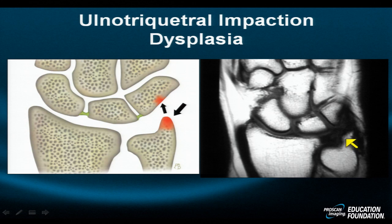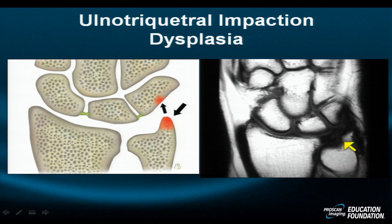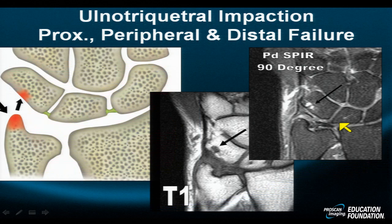In patients with negative ulnar variance, sometimes the ulnar styloid is bizarrely long, fat, overgrown, or dysplastic. It may not seem problematic in the neutral position, but imagine playing golf and going from pronation to supination or from radial to ulnar deviation — you're going to abut these two structures and create diffuse swelling distal to the ulnar styloid, as seen here.